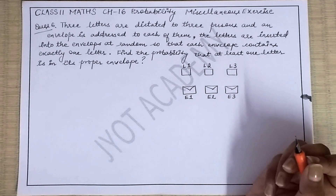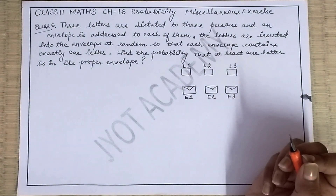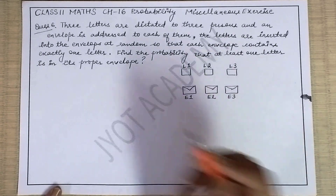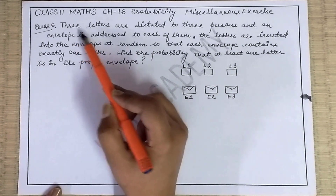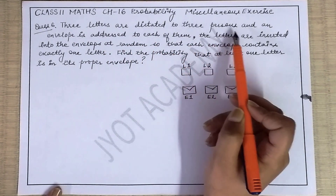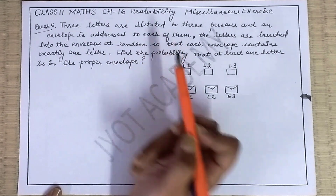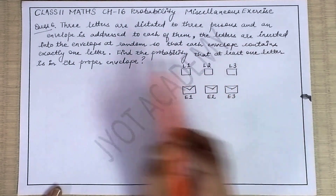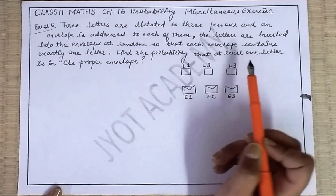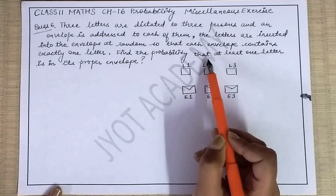Hello students, welcome back to my YouTube channel. Let's continue our miscellaneous exercise on Chapter 16 - Probability. Question number six: three letters are dictated to three persons and an envelope is addressed to each of them. The letters are inserted into the envelopes at random so that each envelope contains exactly one letter.